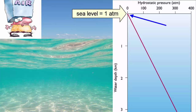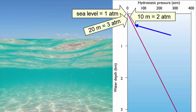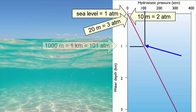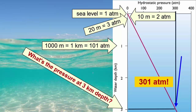At sea level, the air pressure is 14 pounds per square inch, or 1 atmosphere, abbreviated as ATM. For every 10 meters you descend in the oceans, the pressure increases by 1 atmosphere. At 10 meters, it's 2 atmospheres; at 20 meters, it's 3. At 1,000 meters, or 1 kilometer, it's 101 atmospheres. What's the pressure at 3 kilometers, in the center of the mid-ocean ridge rift valleys? 301 atmospheres — that's 300 times the surface pressure.